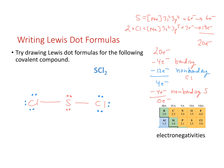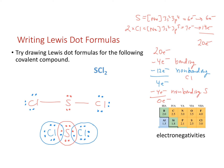Drawing this as a Lewis dot diagram: sulfur in the middle with six valence electrons, each chlorine with seven. With the bonds drawn as electron pairs rather than lines, each element — both chlorines and sulfur — has a full outer shell of eight electrons assigned. That is the valid Lewis dot diagram for sulfur dichloride.